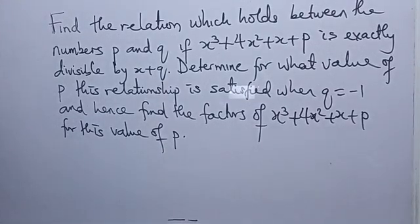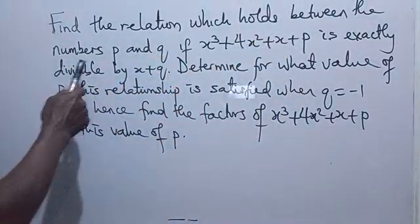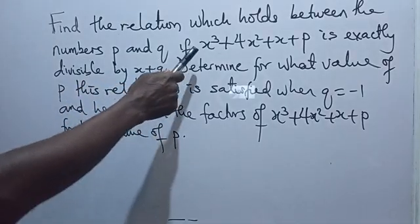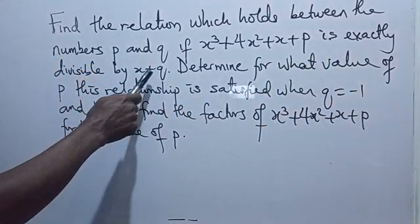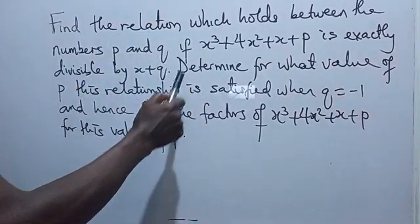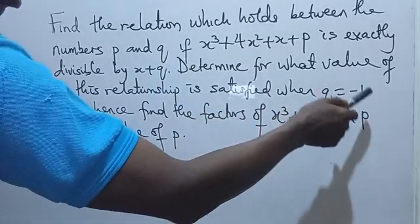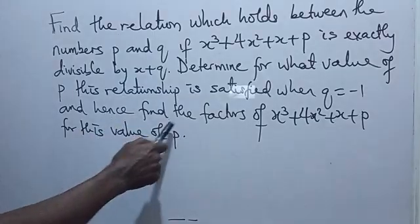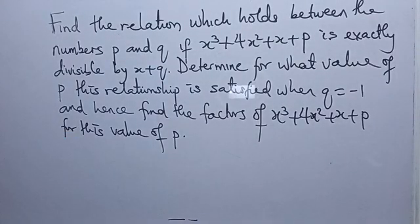Hello, welcome to the tutorial question on factor theorem. In this question, I want to find the relation which holds between the numbers p and q, if x cubed plus 4x squared plus x plus p is exactly divisible by x plus q. The second question is to determine for what value of p this relationship is satisfied when q equals 1, and hence find the factors of that expression for this value of p. So this is a question on polynomial expressions and factor theorems. Let's go ahead.